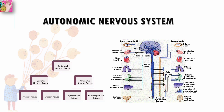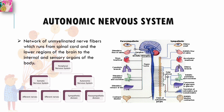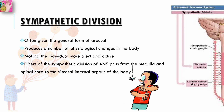The autonomic nervous system is a general name given to a network of unmyelinated nerve fibers which run from the spinal cord and the lower regions of the brain to the internal and sensory organs of the body. Activation of the sympathetic division of the autonomic nervous system is often given the general term of arousal, because it produces a number of different physiological changes in the body, each of which contributes to making the individual more alert and active.